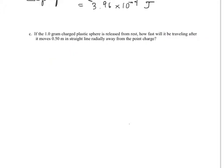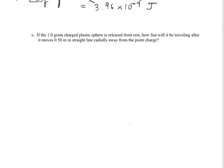Okay, so now we've got this 1 gram charge plastic sphere. It's released from rest. How fast it'll be traveling after it moves 0.5, oops, 0.5 meters in a straight line away from the point charge. So you've got the 1 gram plastic sphere is already 0.4 meters away. Okay, so it's starting out right here. This is the small charge plastic sphere from above, in part B. And it's released, and it's going to move 0.5 meters away.